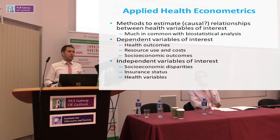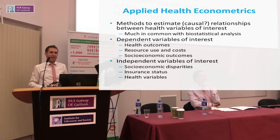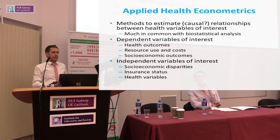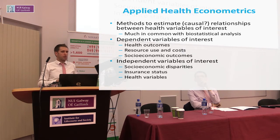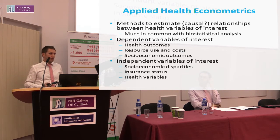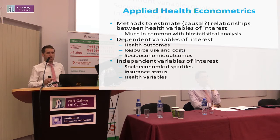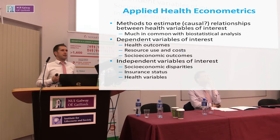Applied health econometrics — as my students in the room will obviously know — covers the range of statistical methods we use to estimate relationships between health variables of interest. Many of these methods have much in common with biostatistical analysis and epidemiological techniques. But what sets health econometrics apart, I think, would be the types of questions we tend to ask and also the types of variables we're interested in modelling.